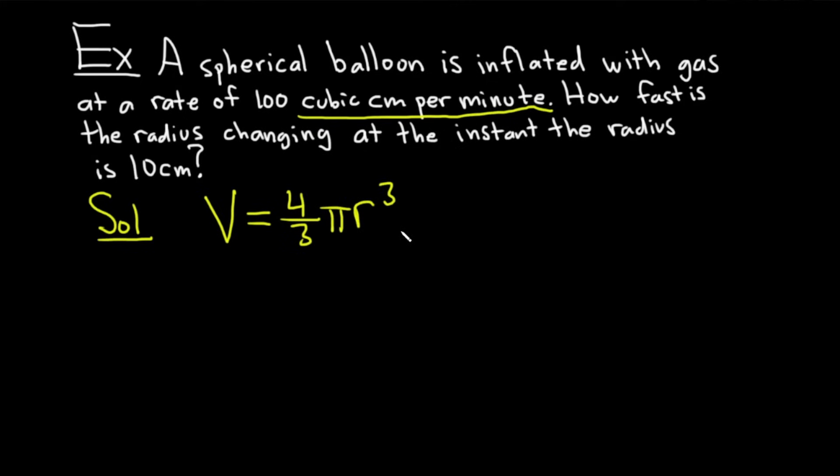Now let's write down what we're given and what we need. We have given. And then we have need. And again, you can always do this for all of the related rates problems. I think it really, really helps.